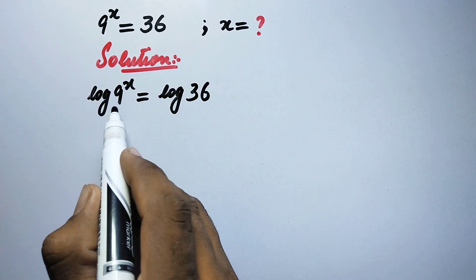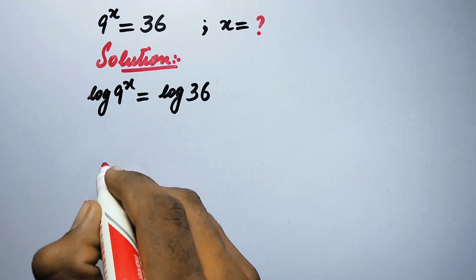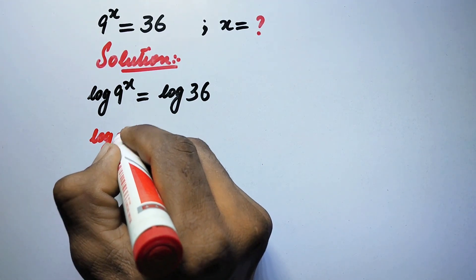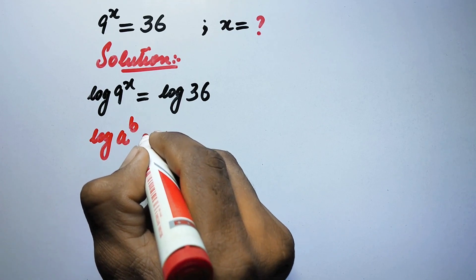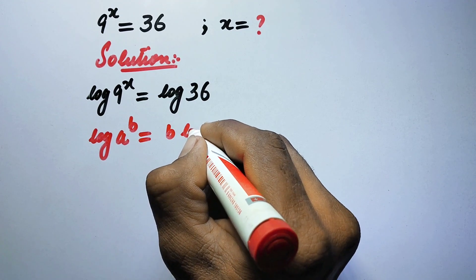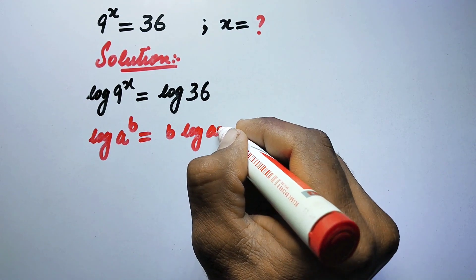And now here we will follow a property of log, that is: log of a to power b is equal to b times log of a.